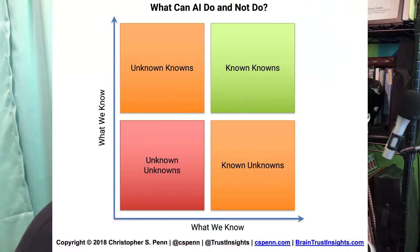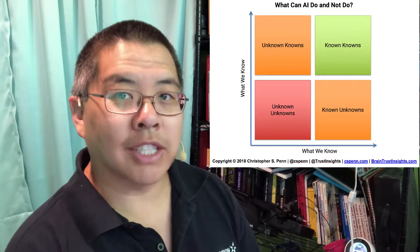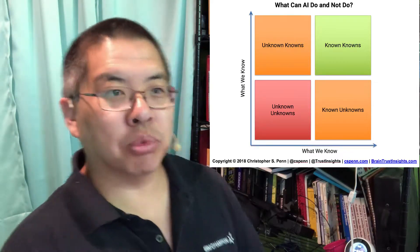When we consider the kinds of problems that AI is good at solving versus not good at solving, go back to something from 2009 or 2010. Former Defense Secretary Donald Rumsfeld was criticized in a press conference for saying that there are known knowns and known unknowns and unknown unknowns. The criticism was valid, but the framework is actually not a bad one. So let's bring this up here.